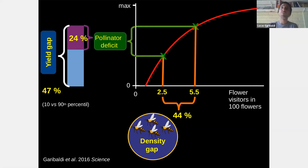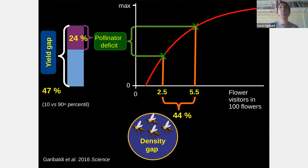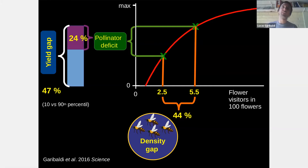Because we work with real farms, we could also estimate the pollinator gap and the yield gap. Working with the 10th and 90th percentile rather than extremes, we found that in both cases it's around 45 percent — despite choosing the same crop and the same cultivation system within each region, some farmers harvest almost 45 percent more than others. This is partly related to a lack of proper pollination, and on average 24 percent of yield can be improved by better pollinator management.